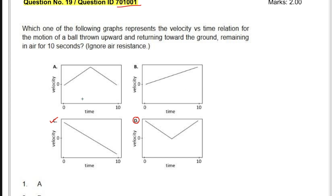The answer key is correct — there is no need to challenge this. Let's understand why it is correct, because we are here to understand the concept behind it. The question asks which graph represents the velocity versus time relation with the motion of a ball thrown upward and returning to the ground, remaining in air for 10 seconds.